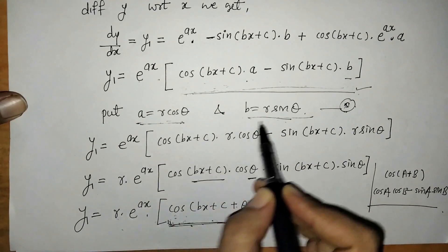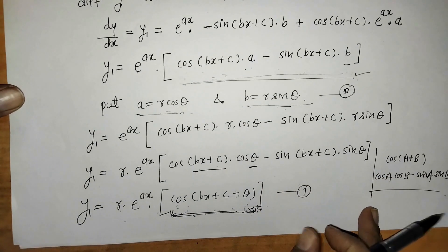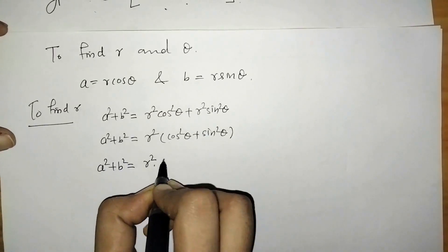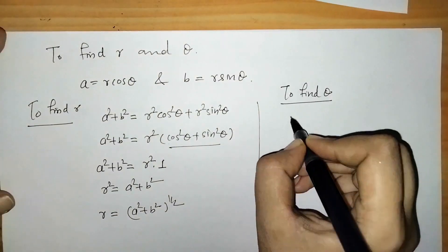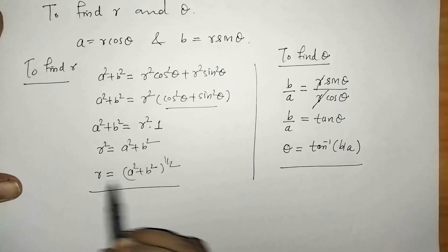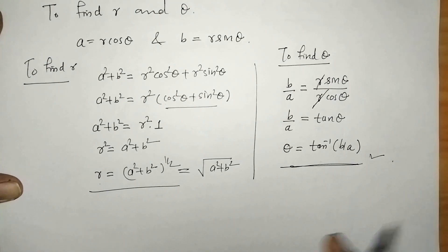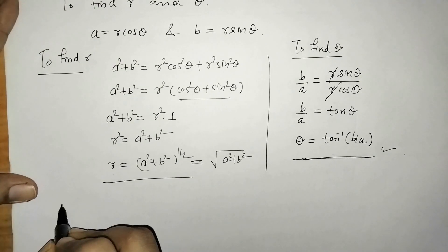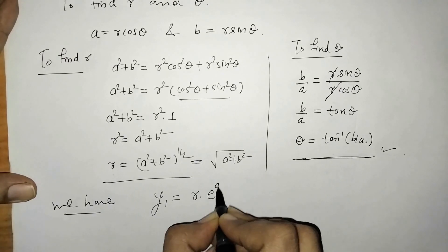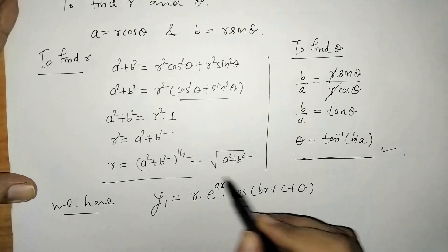For this conversion we used the substitution, and now we find the values of r and theta. r is equal to root of a squared plus b squared, and theta is equal to tan inverse of b by a. So the first derivative y1 is given by r into e raised to ax into cos of bx plus c plus theta.